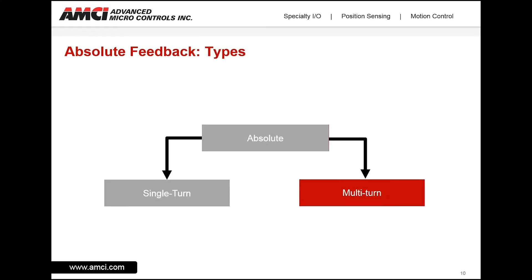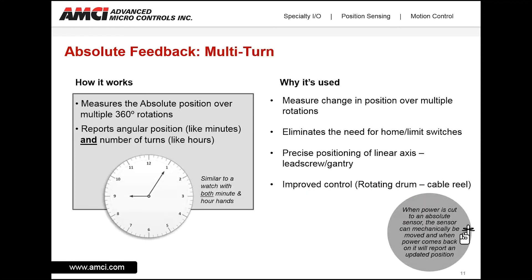For multi-turn rotary feedback, we measure the absolute position over multiple 360 degree rotations. It reports both angular position and the number of turns that have occurred since the shaft started rotating — similar to a watch with both a minute hand and an hour hand. These are used to measure change in position over multiple rotations, can eliminate the need for extra sensors such as home switches or limit switches to prevent over travel, and provide precise positioning of a linear axis such as a lead screw or gantry. Think of a rotating drum or a cable reel.